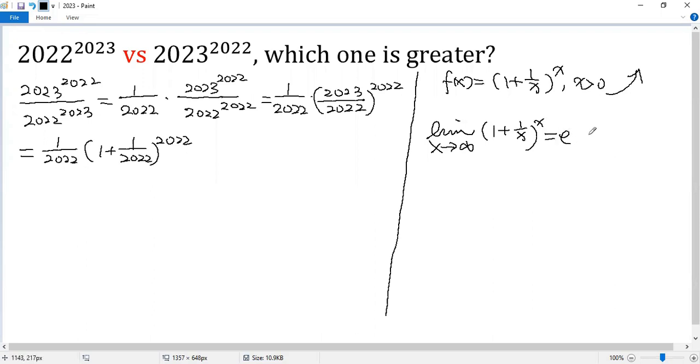The base of the natural logarithm, which we know is approximately 2.7. That means the second factor is less than e. So we get less than (1/2022) times e.